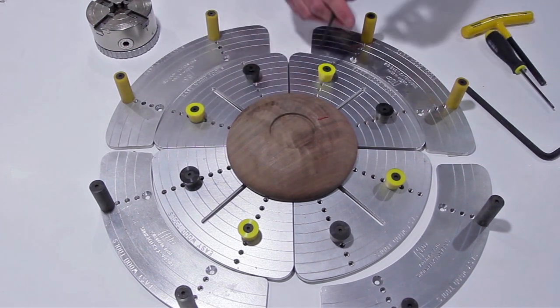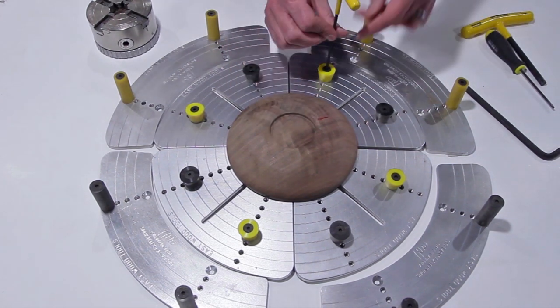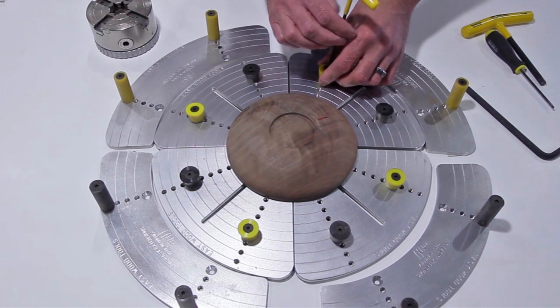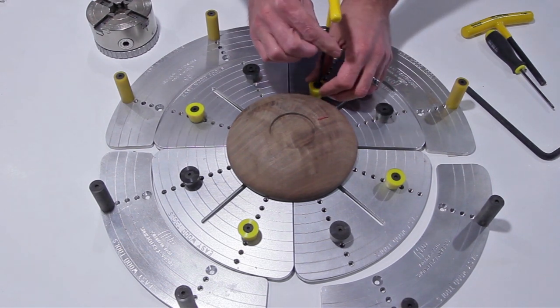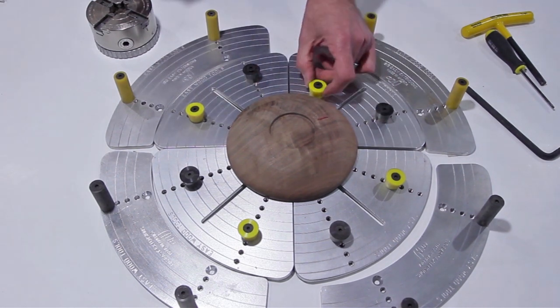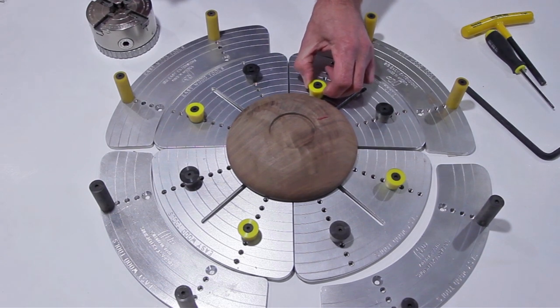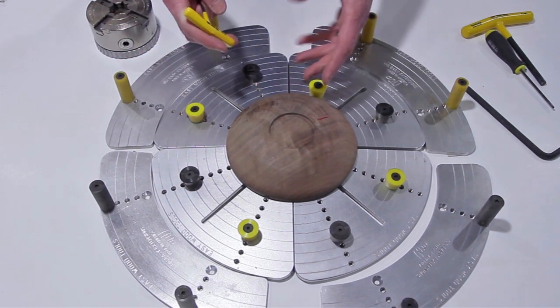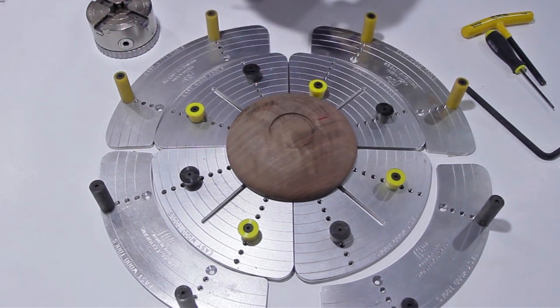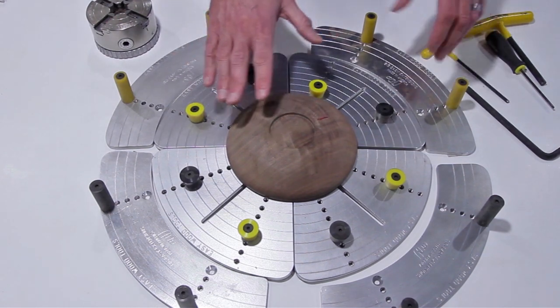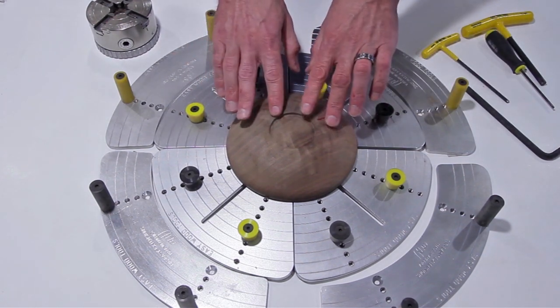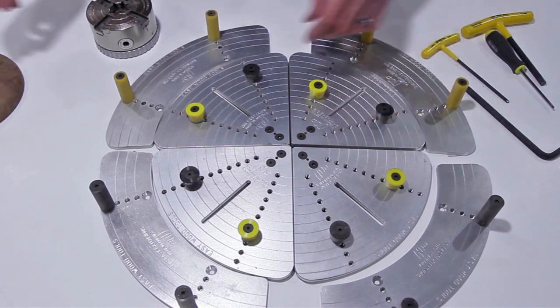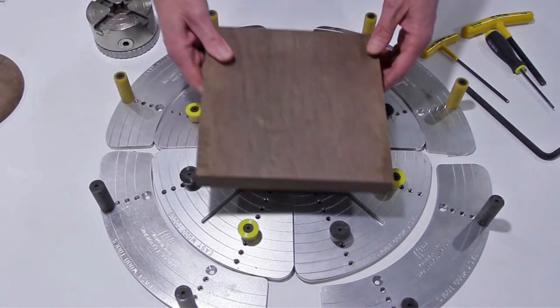These are soft urethane so they're not going to mar up your work. Just clamp it down and clean up the face. And this isn't for roughing out anything—it's just for doing some light detail work and cleaning up the bottoms of pieces. You can actually put square pieces in there as well.